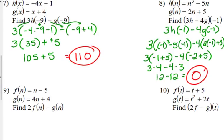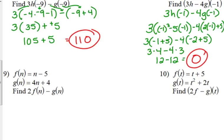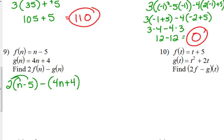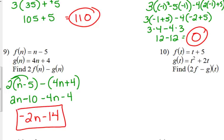That's evaluating at a number. For numbers 9 and 10 we can do the exact same thing but just leave it in function form — we're not plugging in a number, we're just combining the functions. So we're doing this linear combination: 2f minus g. Any time you see that minus, put a set of parentheses — people time and time again just write the minus and start writing the function, so the only thing that becomes negative is part of the expression instead of the whole thing. Distribute the 2, distribute the negative, combine like terms: 2n minus 4n is negative 2n, minus 10, minus 4 is negative 14.